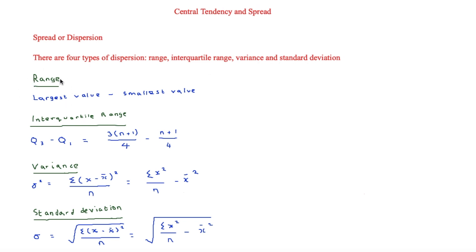Range is simple: it's just the largest value minus the smallest value. The interquartile range is Q3 minus Q1, the upper quartile minus the lower quartile. To find the upper quartile you do 3(n + 1) / 4, and the lower quartile is (n + 1) / 4. Sometimes you don't need that +1, but normally you do.